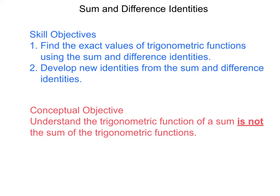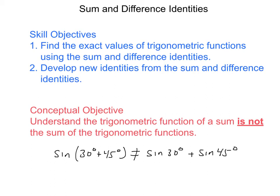What this conceptual objective means is that if I take the sine of something like 30 degrees plus 45 degrees, that is not equal to just the sine of 30 degrees plus the sine of 45 degrees. You can actually put this into your calculator and confirm that, but you have to realize that does not work.